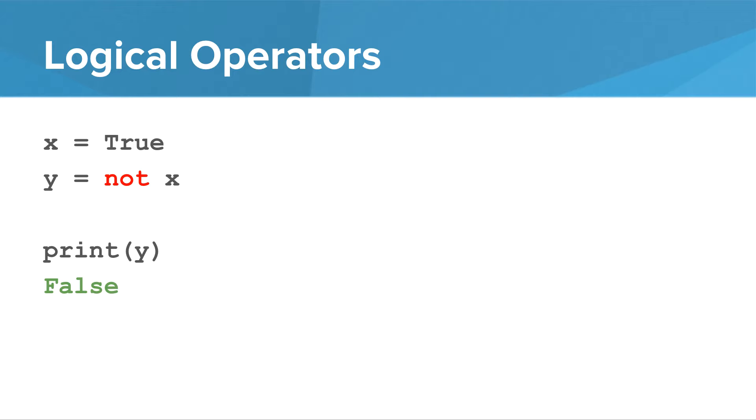Given a value of true for x, we see that y evaluates to false since it is not x, which is true.